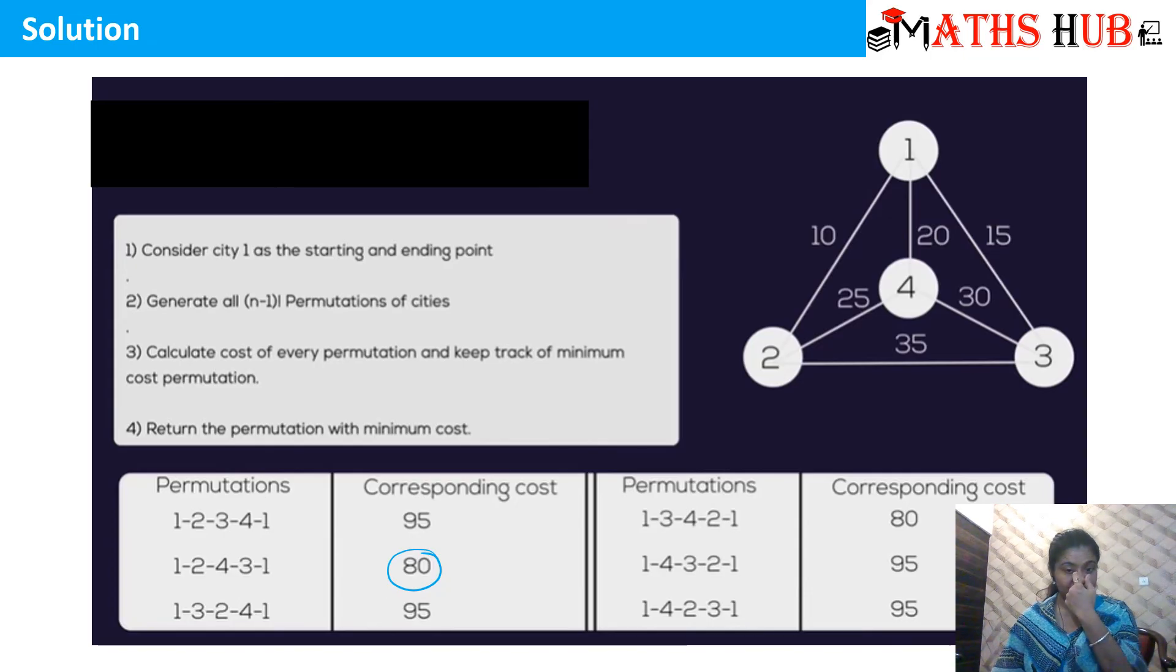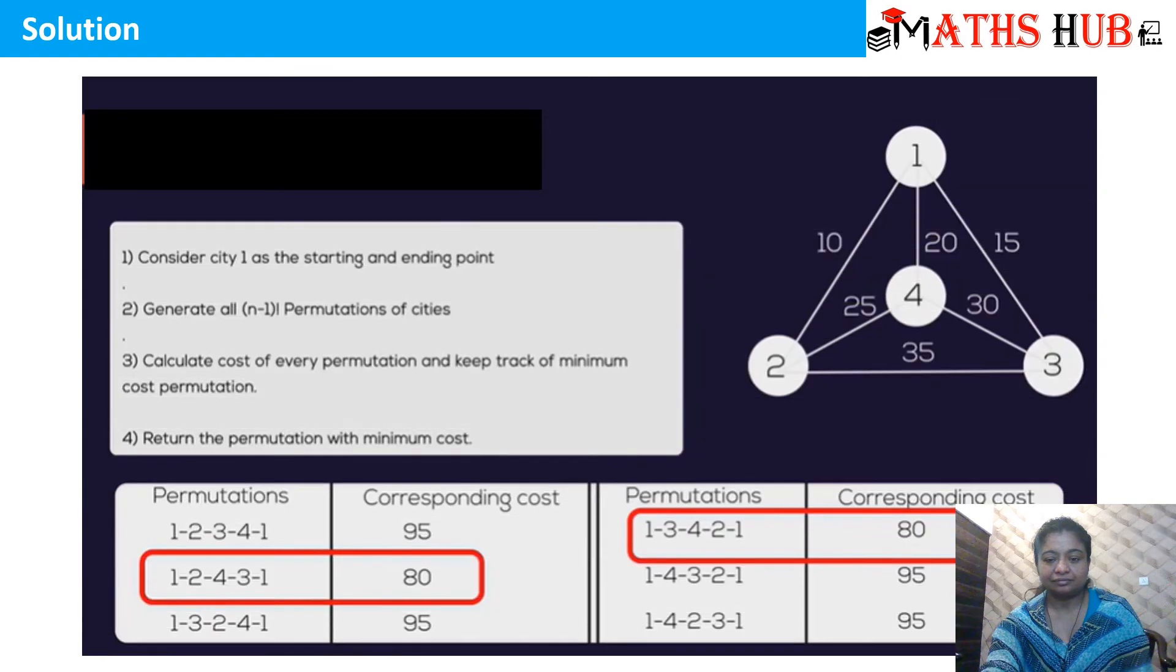This is how you will apply the travelling salesman's problem. We will find all the permutations from the first city to that city. And out of all those permutations, whichever gives you the minimum cost, that becomes your answer. So we will get these two paths.